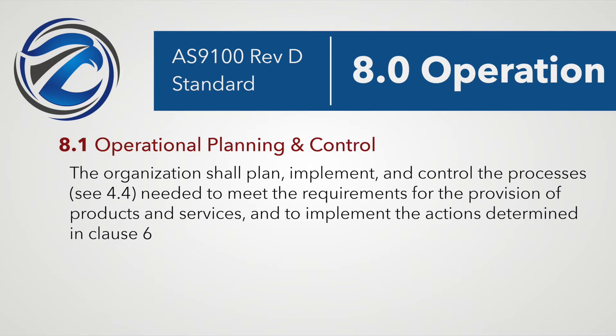The organization must accomplish that purpose by two primary actions: A) determining the requirements for the products and services they're providing, and B) establishing criteria for how you plan to accomplish A. Both A and B are quite detailed. There are four sub-clauses to support this planning and control activity: 8.1.1 operational risk management, 8.1.2 configuration management, 8.1.3 product safety, and 8.1.4 prevention of counterfeit parts. Those will be covered in other episodes.